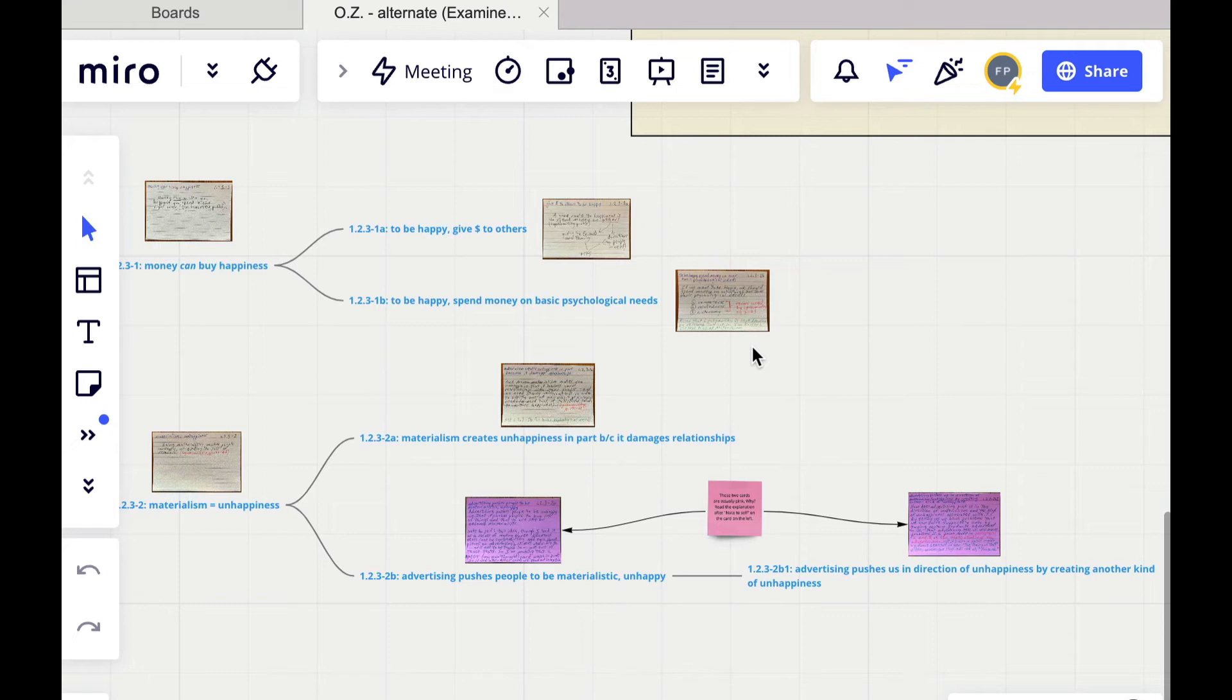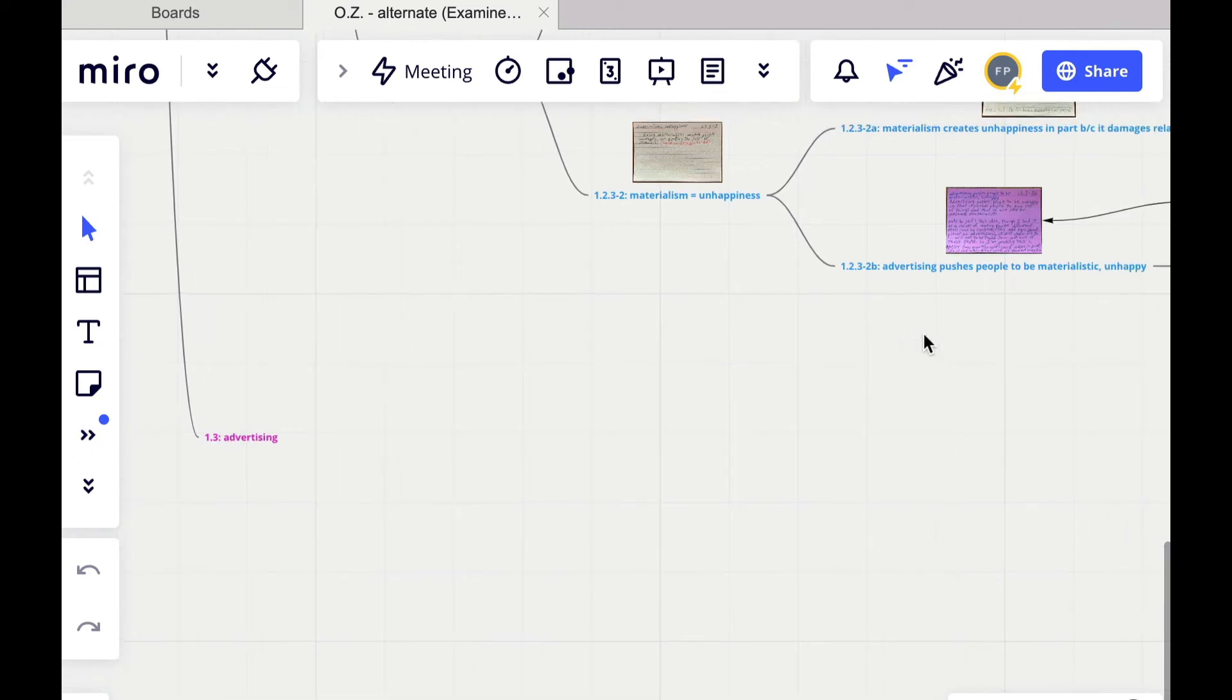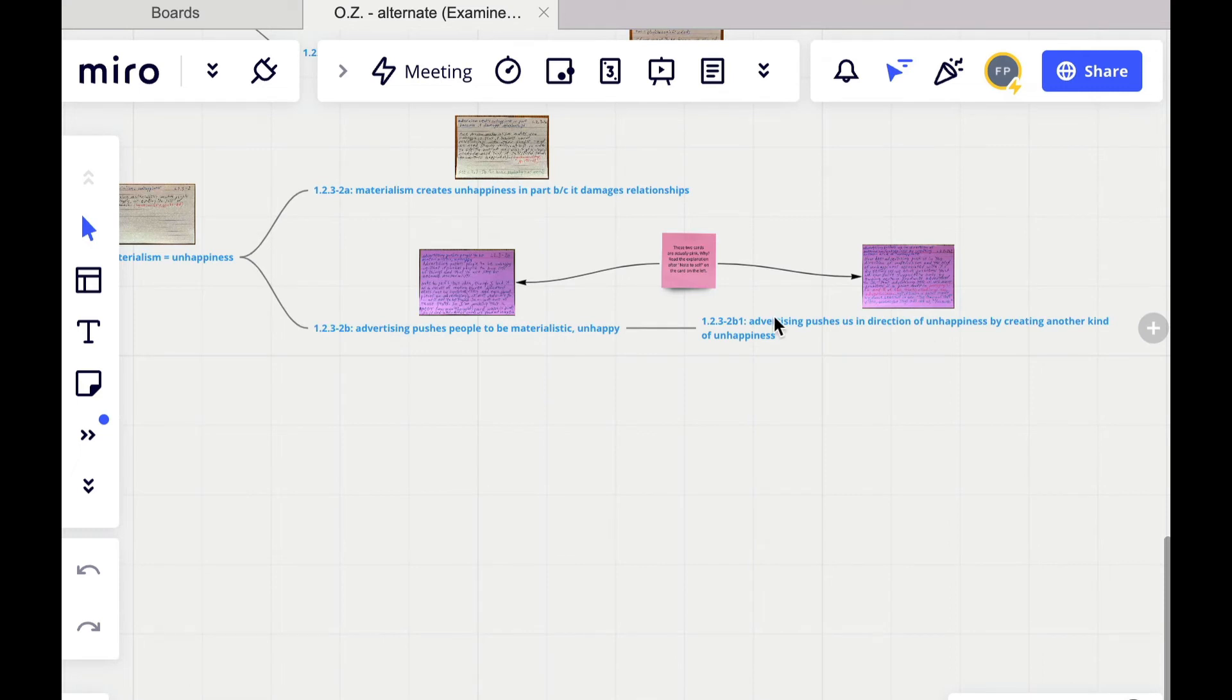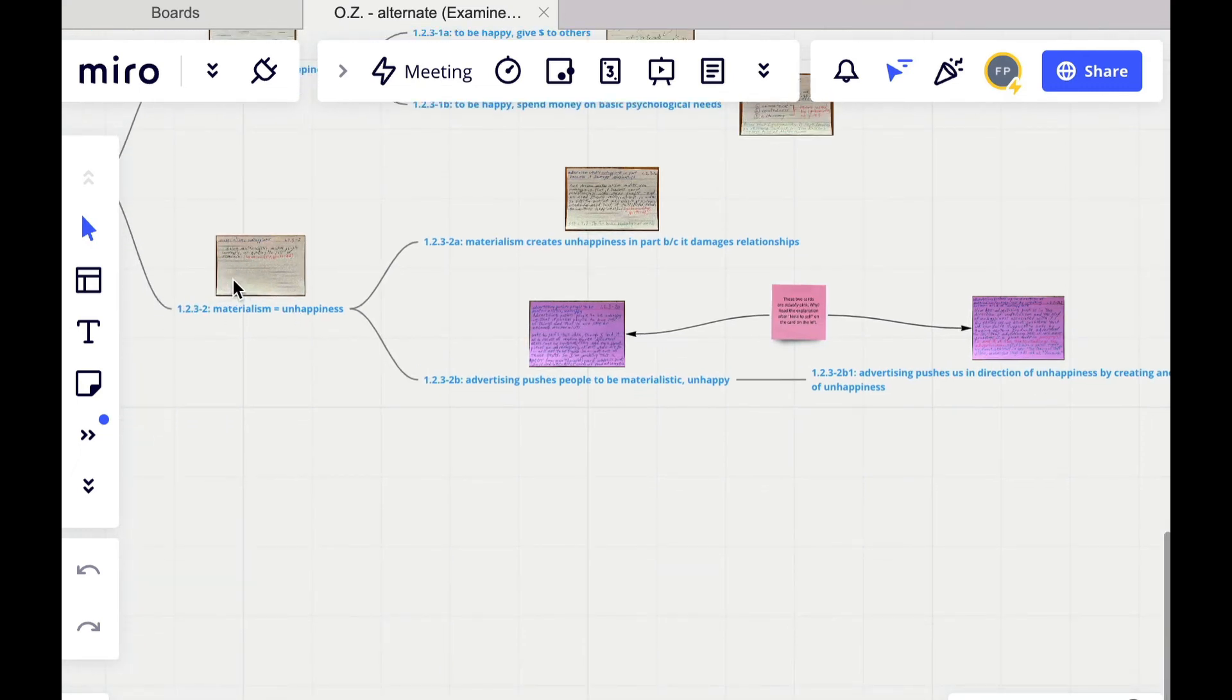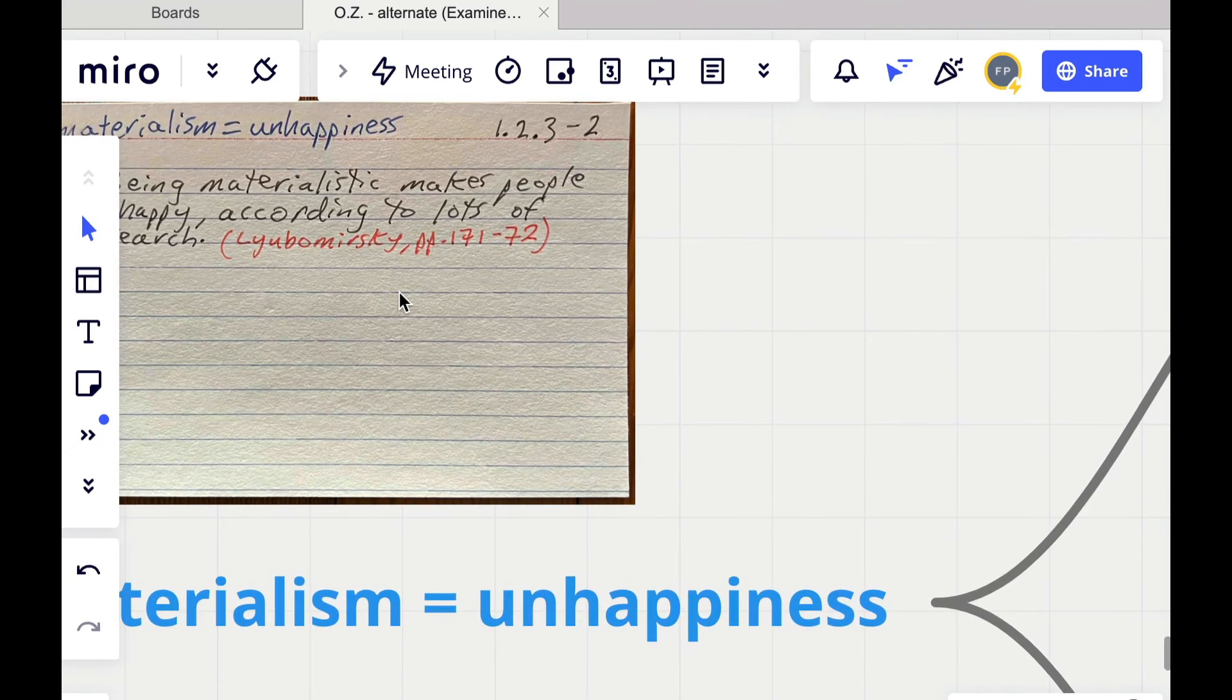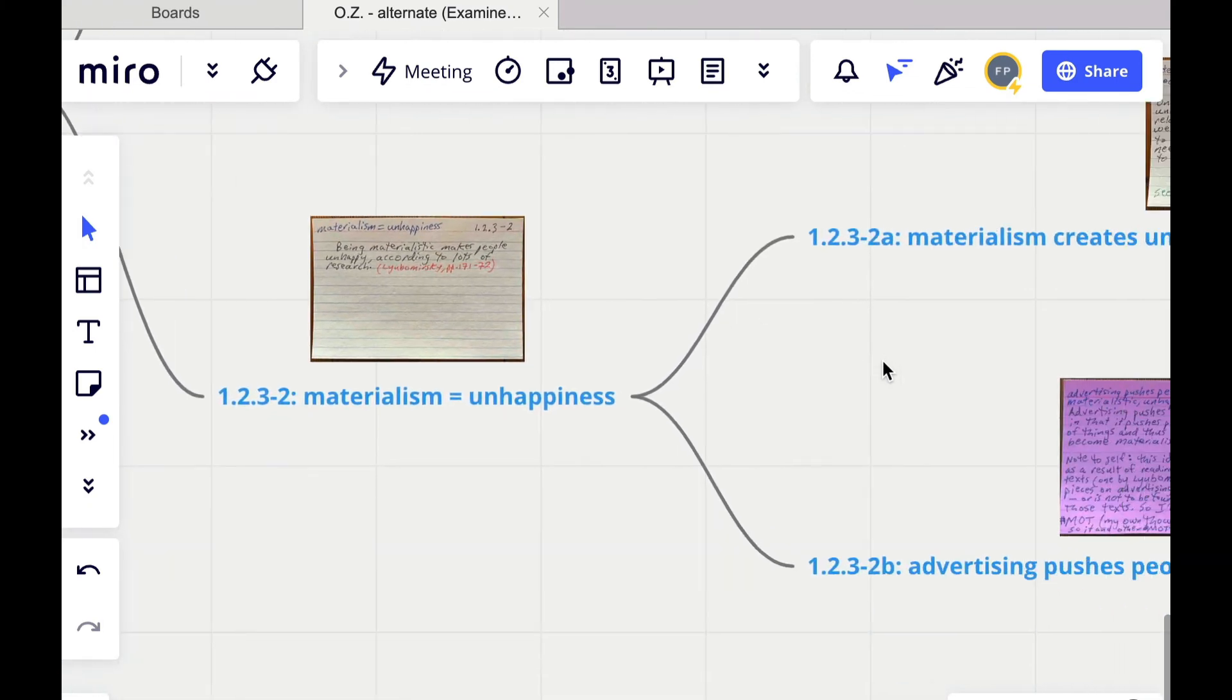The third text, which actually consists of paragraphs from three different sources, is about advertising. And I had been thinking I would create a separate branch just for advertising, which you see over here. It's all lonely. Eventually, I will be adding some notes there. But the first couple notes that we created, I eventually decided that I wanted to have them be continuations of this idea over here that materialism leads to unhappiness. So this idea that materialism leads to unhappiness is an idea from Sonia Lyubomirsky's book, as you can see here. So being materialistic makes people unhappy, according to lots of research, mountains of research, she says in her text.